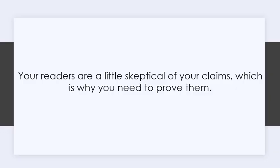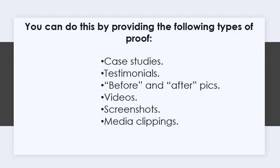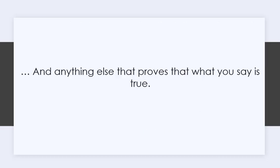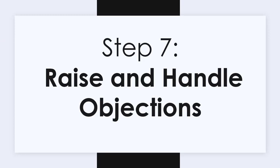Step 6: Provide proof. Your readers are a little skeptical of your claims, which is why you need to prove them. You can do this by providing the following types of proof: case studies, testimonials, before and after pics, videos, screenshots, media clippings, and anything else that proves that what you say is true.